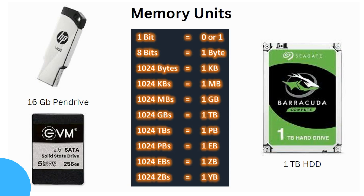So, 1 bit is equal to one character. 8 bits is equal to 1 byte. 1024 bytes is equal to 1 kilobyte.